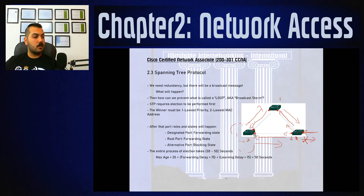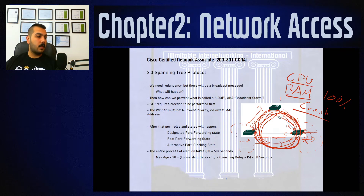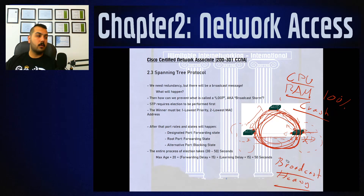Switch two also receives two broadcast messages — one from switch one and one from switch three — and forwards them again. This keeps happening forever, or until resource utilization is full and causes the switches to crash, because broadcast messages are heavy and consume a lot of CPU and RAM resources.